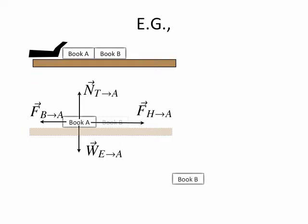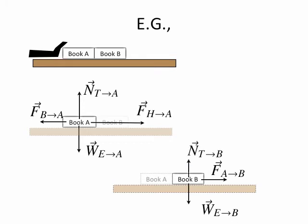Then we draw a free body diagram for book B. Now book A becomes a dotted, shadowy thing, and the floor is dotted and shadowy. We identify the forces acting on book B: book A is pushing on book B, the earth is pulling down on book B, and the table is pushing up on book B. So there are only three forces acting on book B, all with well-defined sources. Those are the two free body diagrams for the two interesting objects. Finally, I'm choosing the x direction to be horizontal and the y direction to be vertical.